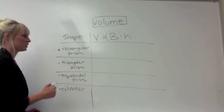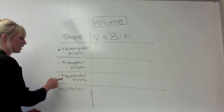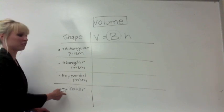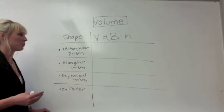A rectangular prism has a rectangular base. A triangular prism has a triangular base. A trapezoidal prism has a trapezoid as a base. And a cylinder has a circle as a base.